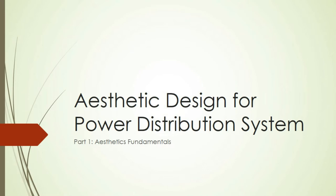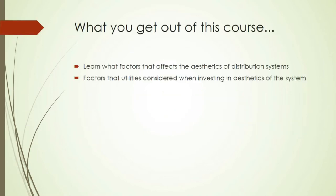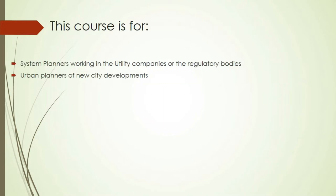Please note that this is a two-part course, and this is the part one video in which I'm going to talk about some fundamental aesthetic knowledge. The playlist of this course can be found in the YouTube description below. With this mini course series, you will learn about what factors affect the aesthetics of distribution systems, as well as factors that utilities would consider when investing in aesthetics of their system. This course is for system planners working in utility companies or regulatory bodies, as well as urban planners of new city developments.